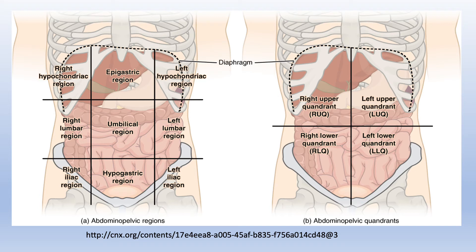If we want to be more precise when describing a pathology, then we need to use an alternate system to divide the abdominopelvic region. Now we will focus on the illustration labeled A — abdominopelvic nine regions.